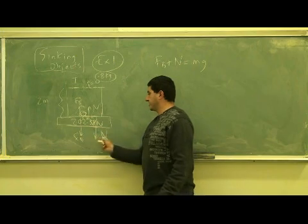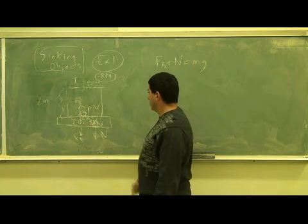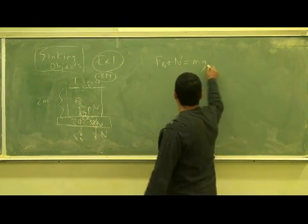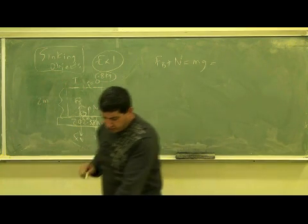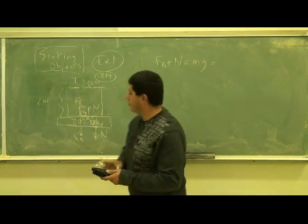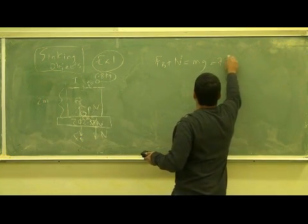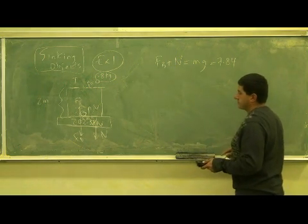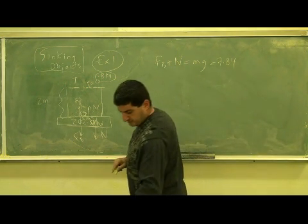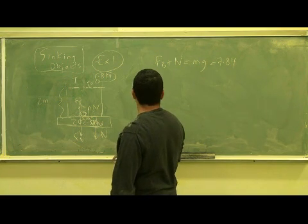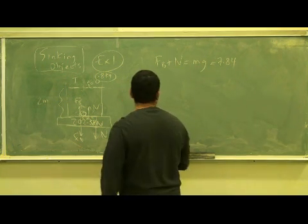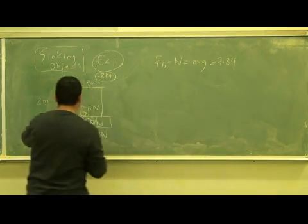So therefore the sum of the two, FB and N, is equal to the mg. That should equal to the weight 7.84. Therefore the new reading should go up to 207.84.